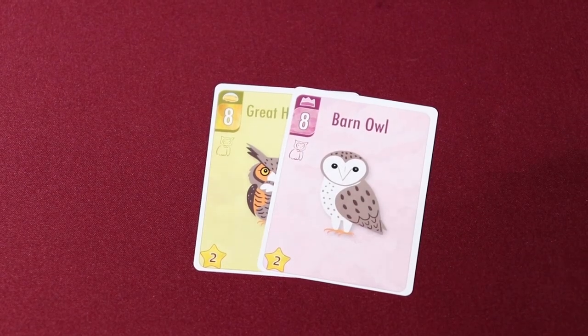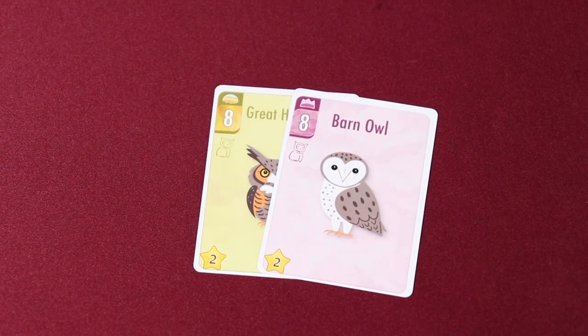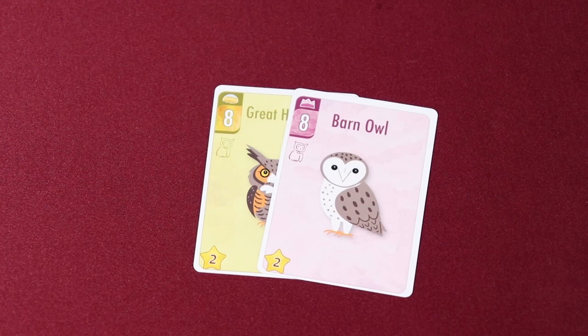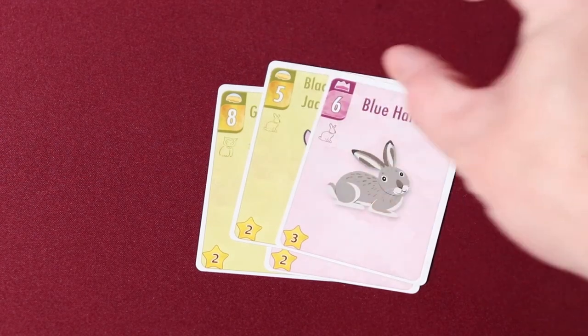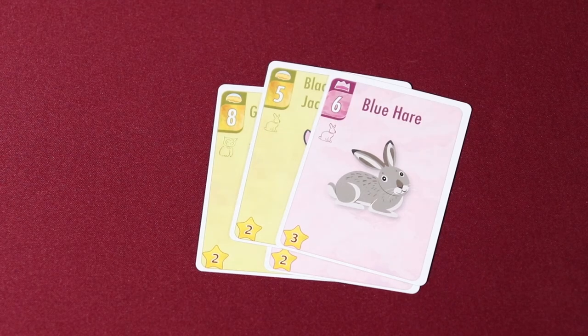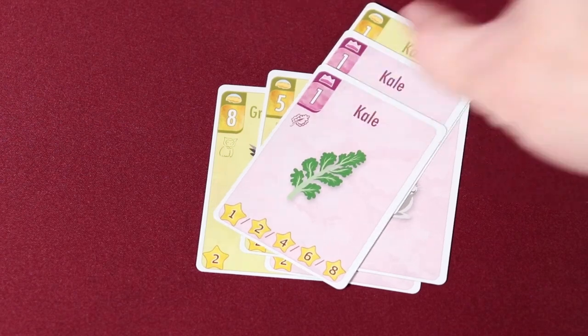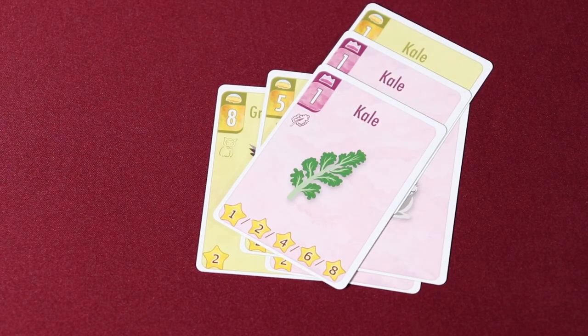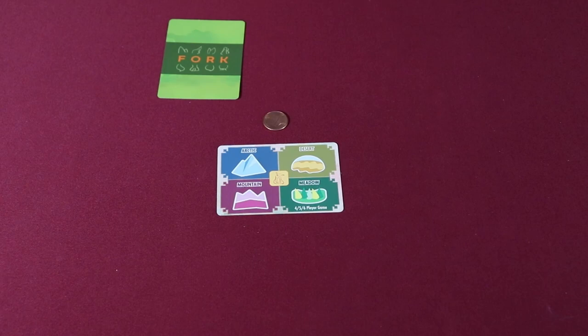When the end game criteria is met, players compare their points from their collected cards. All cards indicate their point value at the bottom of the card. Owls are worth 2 points. Rabbits are worth between 1 and 3 points. Kale cards score points based on the amount that a player collects. Players can score at most 5 Kale cards in a single round.